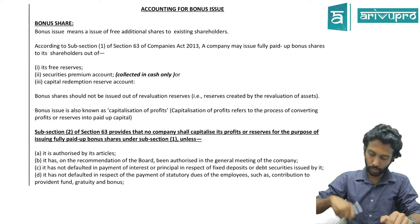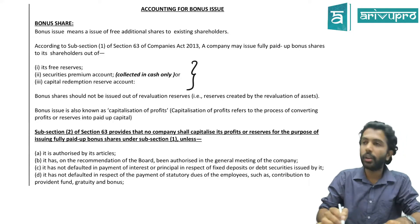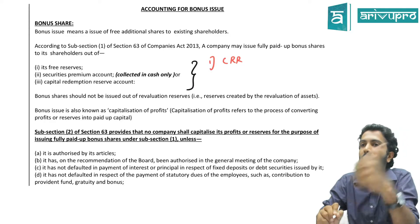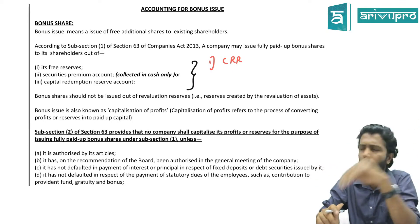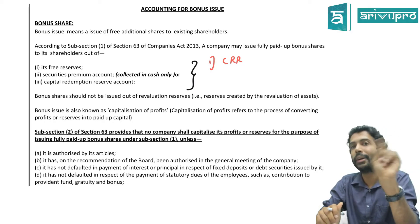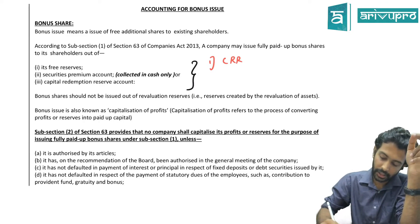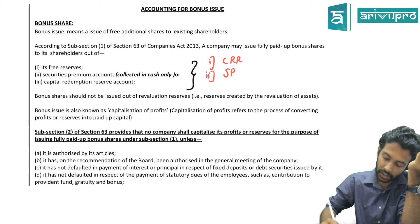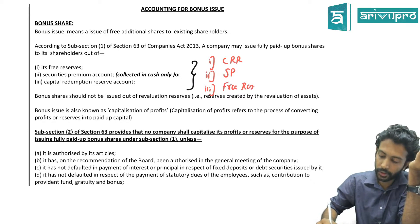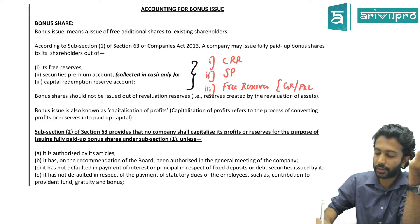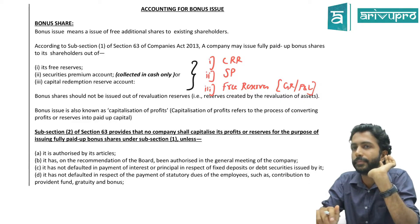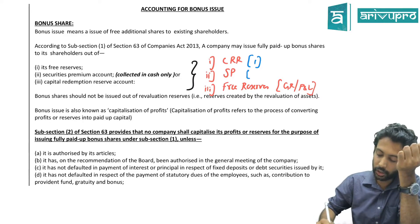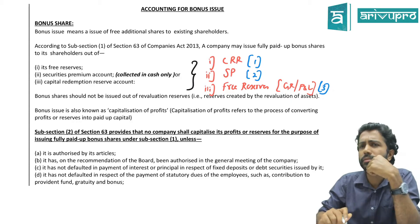For the purpose of bonus issue you can use three reserves. First priority is CRR — capital redemption reserve. Second priority is SP — securities premium. Last priority is for free reserves like general reserve, P&L, etc. Mostly you will see these two as free reserves in your questions. First priority: capital redemption reserve. Second priority: SP. Last priority: free reserve.